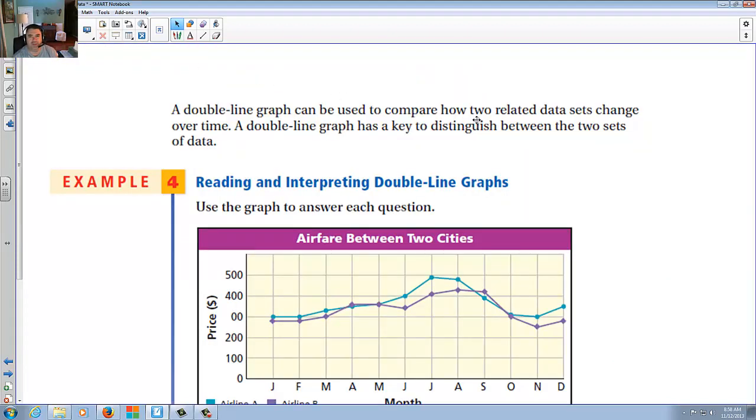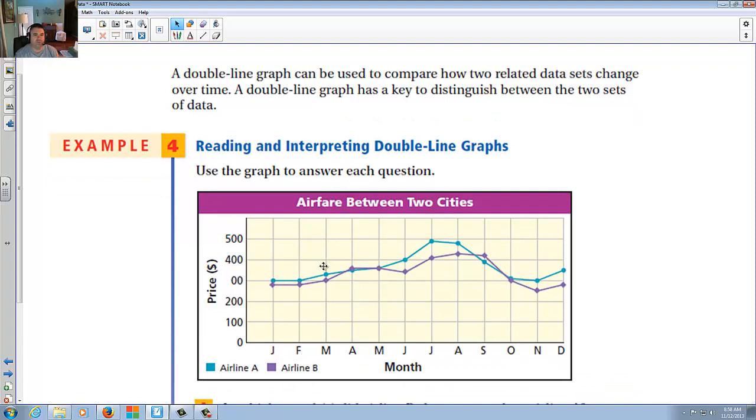A double line graph can be used to compare how two related data sets change over time. A double line graph has the same, same as a double bar graph. There's a double line graph. Why do you do that? To compare lines up and down, just show the differences between the two.